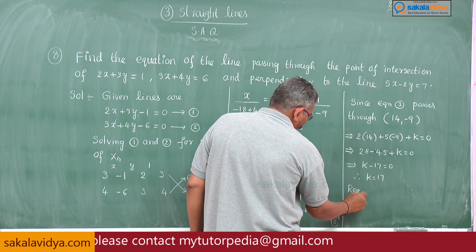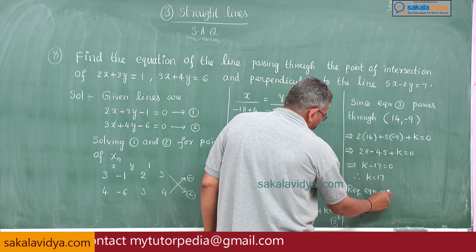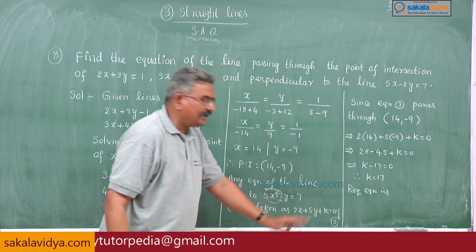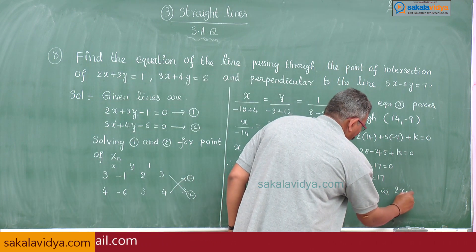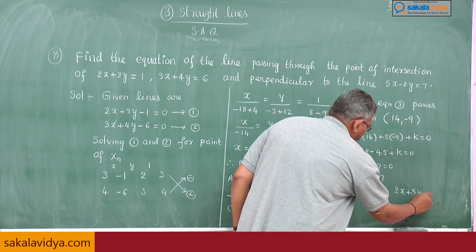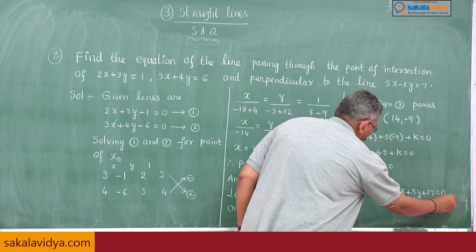Required equation is, replace k by 17, that is 2x+5y+17=0.